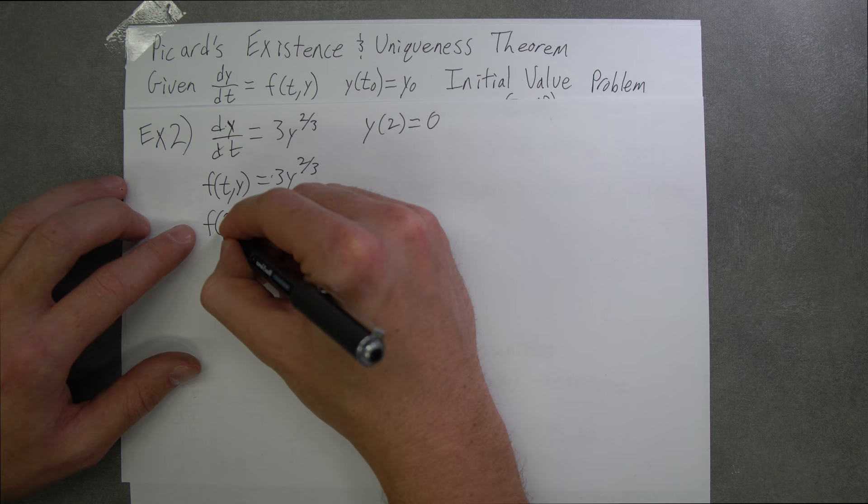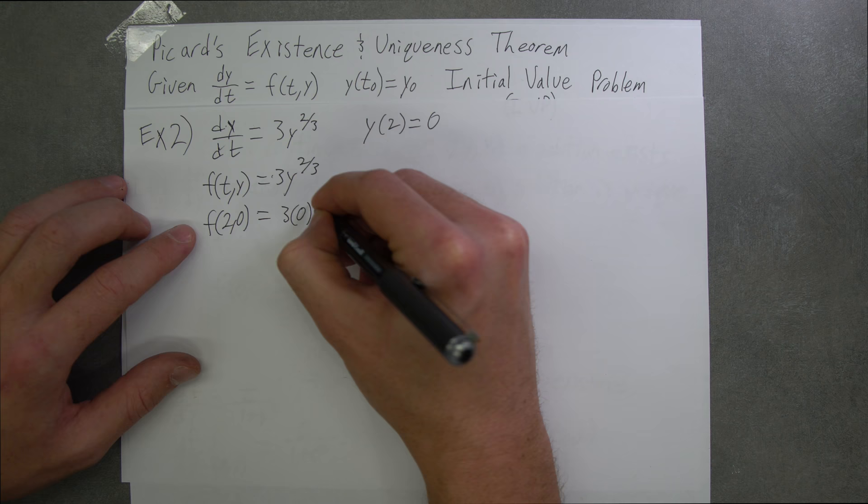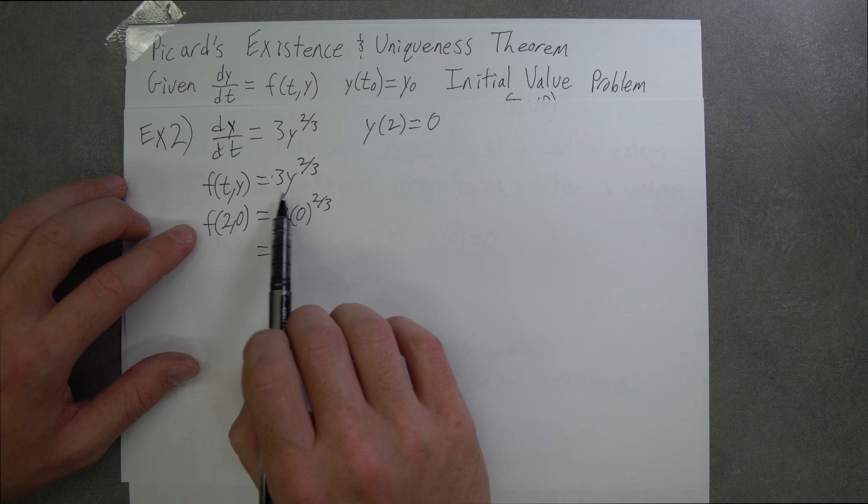If we plug in our initial condition here, f(2,0), this is going to be equal to 3 times 0 to the 2/3, which is equal to 0.